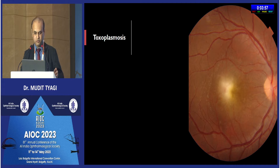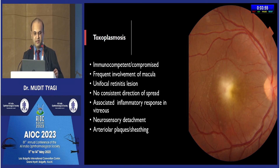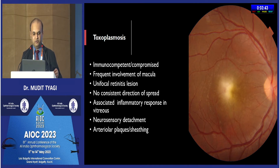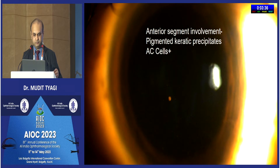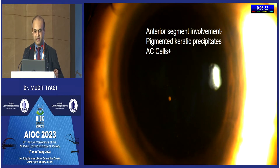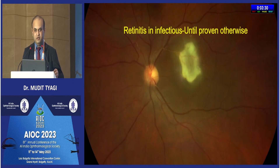If you see significant vitritis with a single yellowish lesion discernible underneath, your diagnosis becomes clear — you are dealing with toxoplasmosis. It can happen in immunocompetent as well as immunocompromised hosts, frequently involves the macula, with no consistent direction of spread. OCT findings include neurosensory detachments, photoreceptor layer detachments. Clinically you may also see arterial plaques or sheeting, and anterior segment involvement with pigmented KPs and anterior chamber cells.